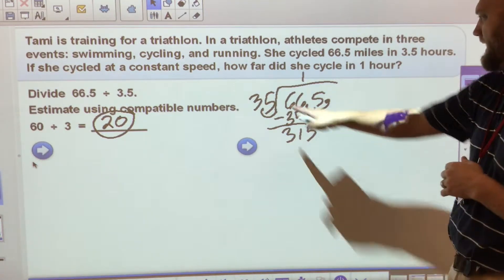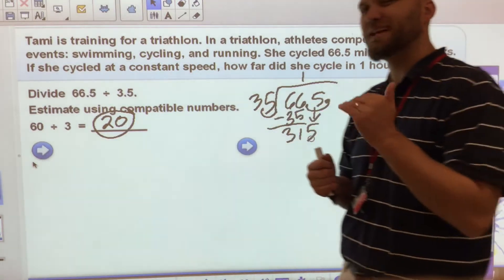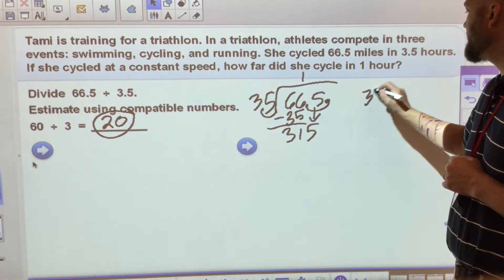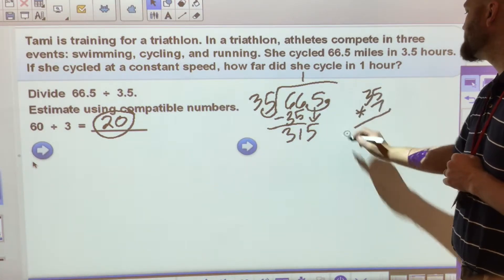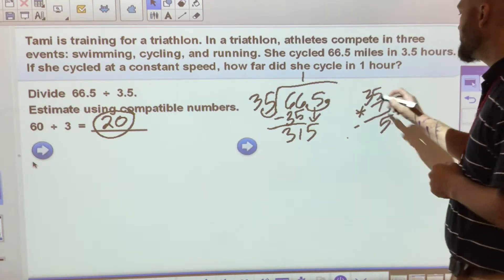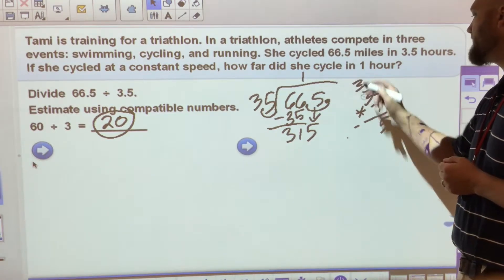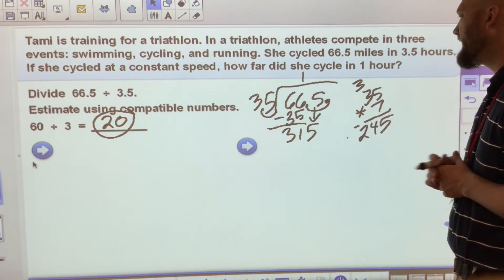So I'm going to say, normally 3 times 10 gives me 30, but that seems a bit high. So let's just try 35 times 7. I just grabbed the number that I knew was less than 10. 7 times 5 is 35. And I end up with 7 times 3 is 21 plus 3 gives me 245. Now, 245 is still a little too low.